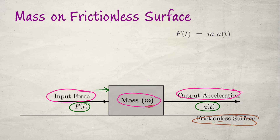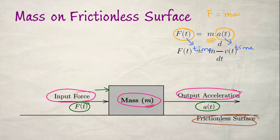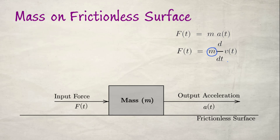What are the equations corresponding to this mass on a frictionless surface? From Newton's laws, the acceleration of the mass is directly proportional to the applied force, with M as the constant of proportionality. So F of T equals M times A of T, where both force and acceleration depend on time. We can also write this as F of T equals M times dV(T)/dT, since rate of change of velocity is acceleration. So we have a system — the mass — with an input signal and an output signal.